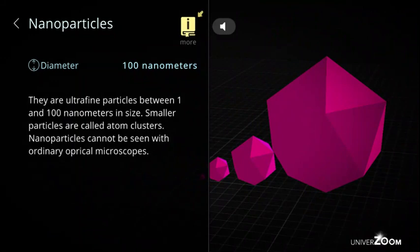Nanoparticles, diameter: 100 nanometers. They are ultrafine particles between 1 and 100 nanometers in size. Smaller particles are called atom clusters. Nanoparticles cannot be seen with ordinary optical microscopes.